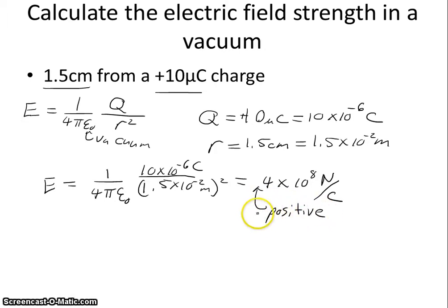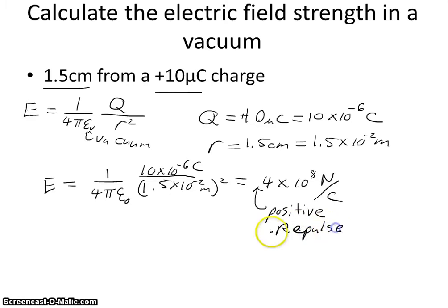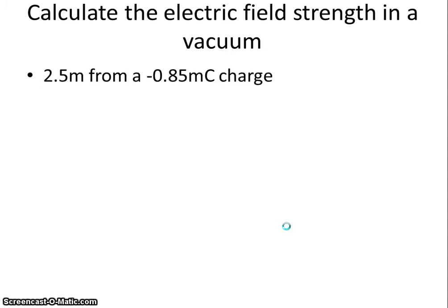The result is positive, which means that if we put a positive test charge 1.5 centimeters from our 10 microcoulomb charge, it would feel a repulsive force. Let's try another one. What if we have a negative 0.85 millicoulomb charge 2.5 meters away?